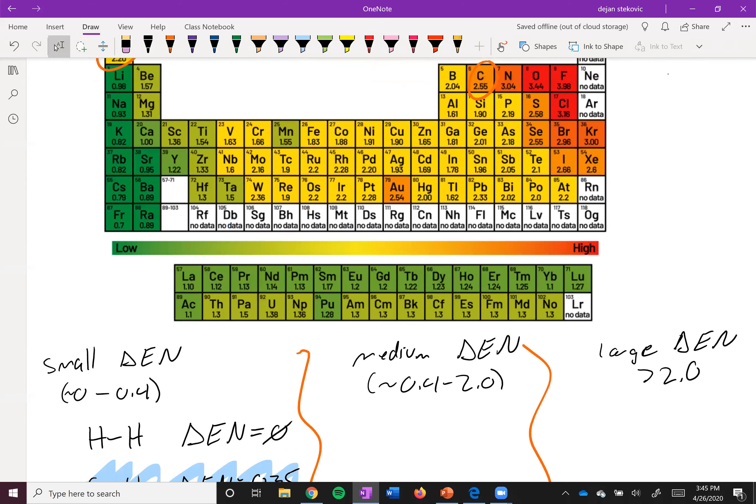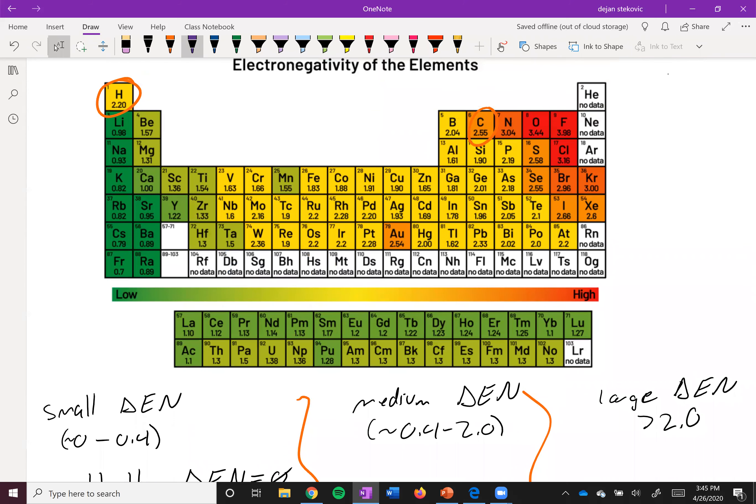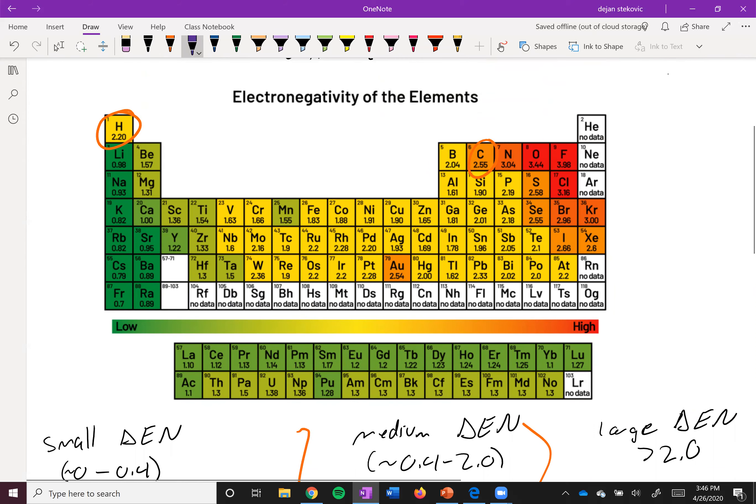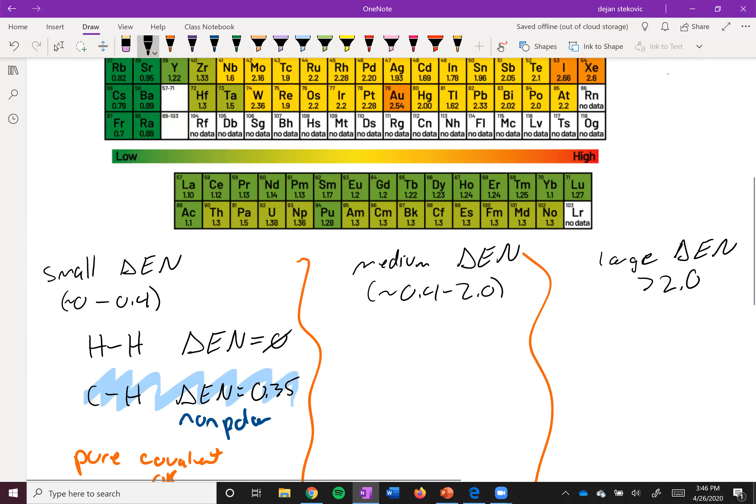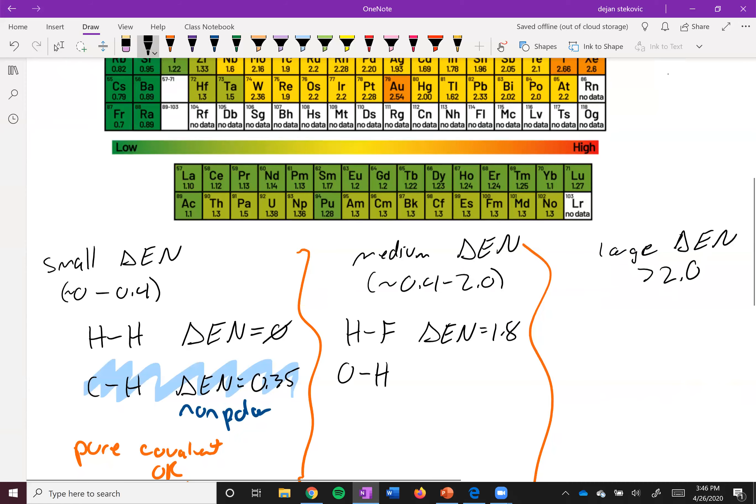A medium amount of electronegativity difference. So for example, something like HF, right? That difference is 1.8. Or probably the most common bond, OH. Definitely know this one, right? OH. That's also a medium difference in electronegativity.